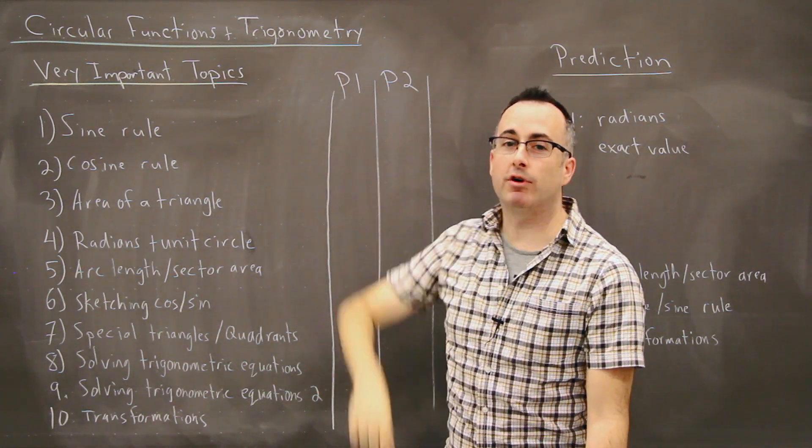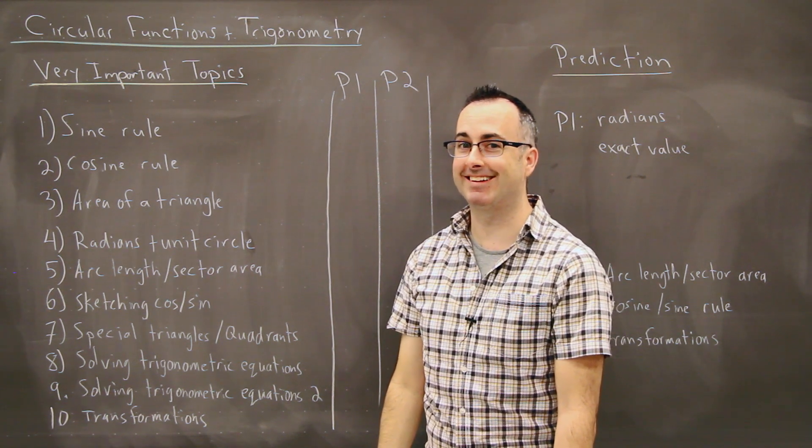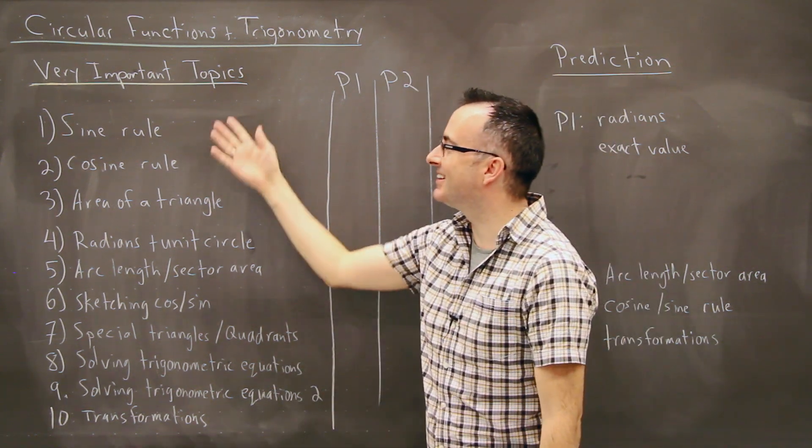Now I have a really bad joke for you for trigonometry. Can a mathematician get a date of cosecant? Okay, that's really bad. All right, so we're going to look at these.